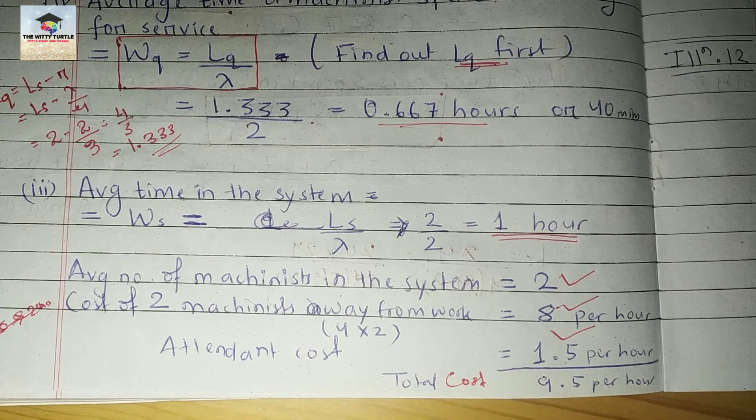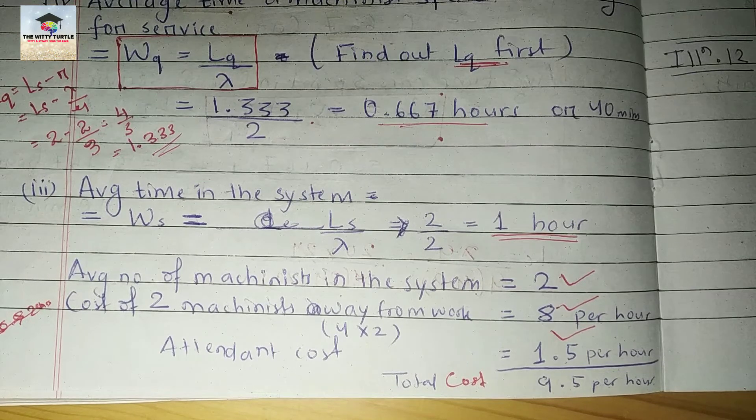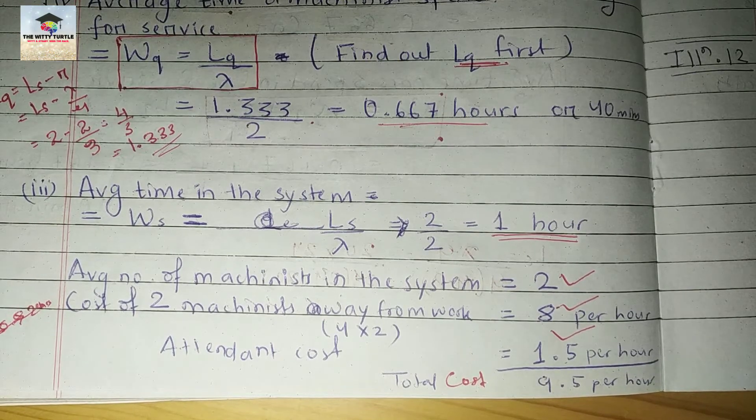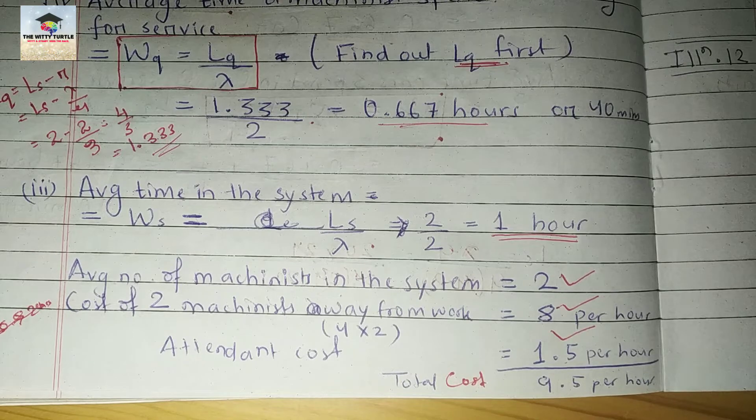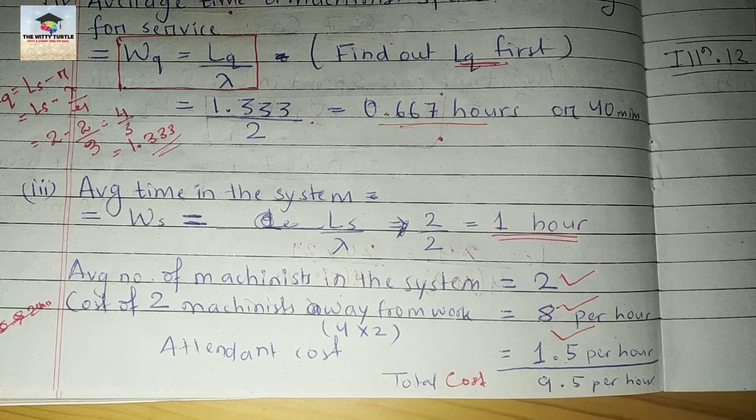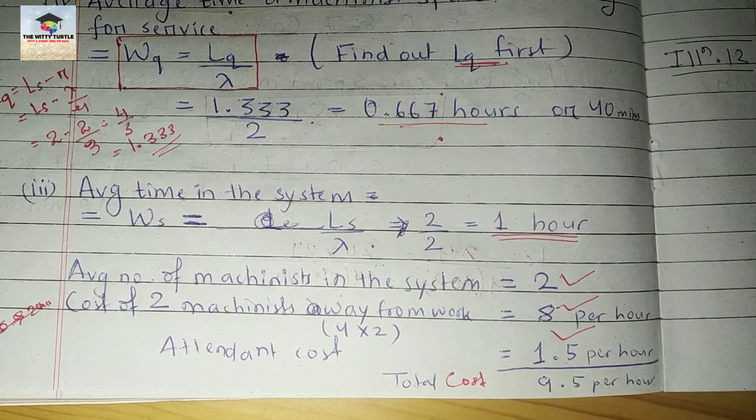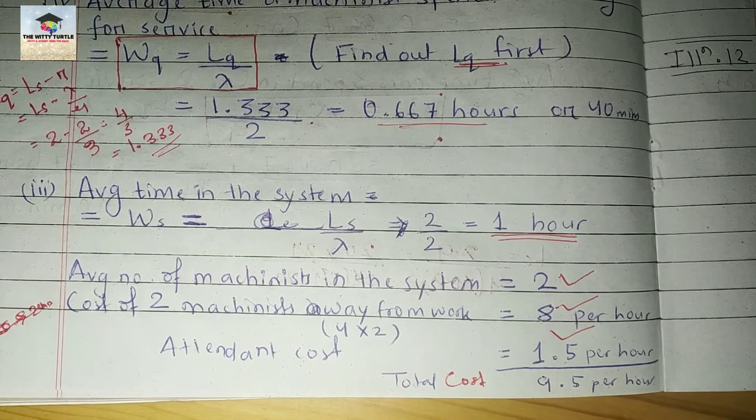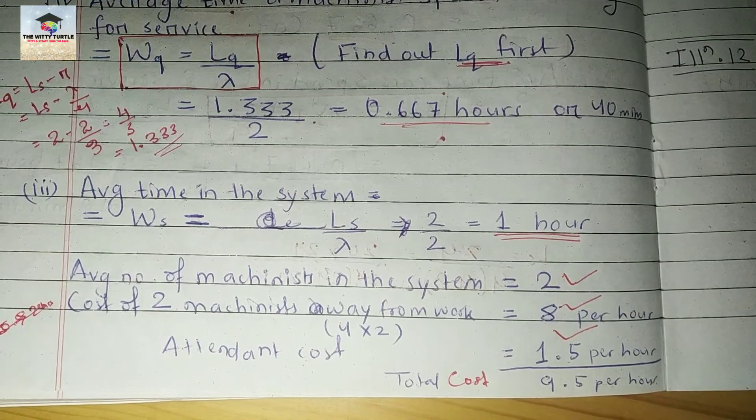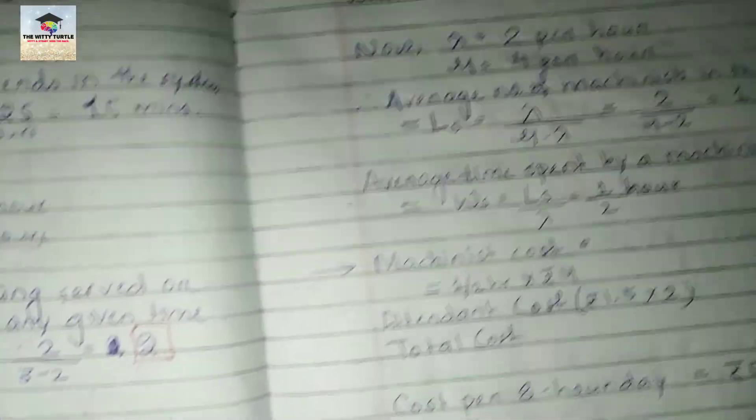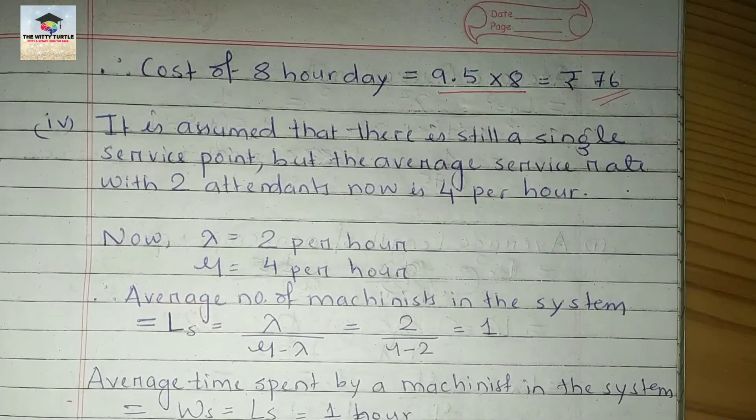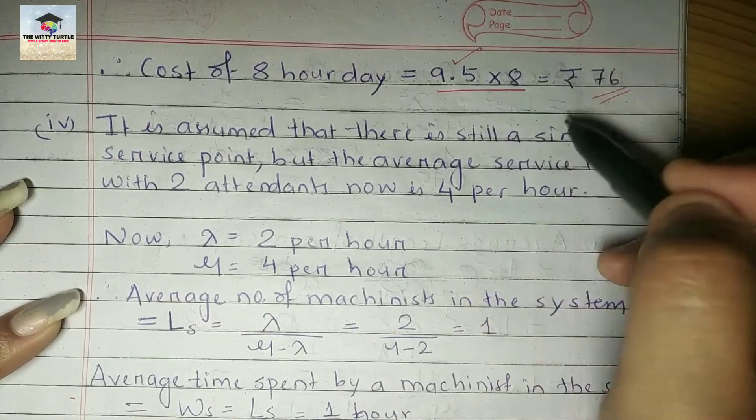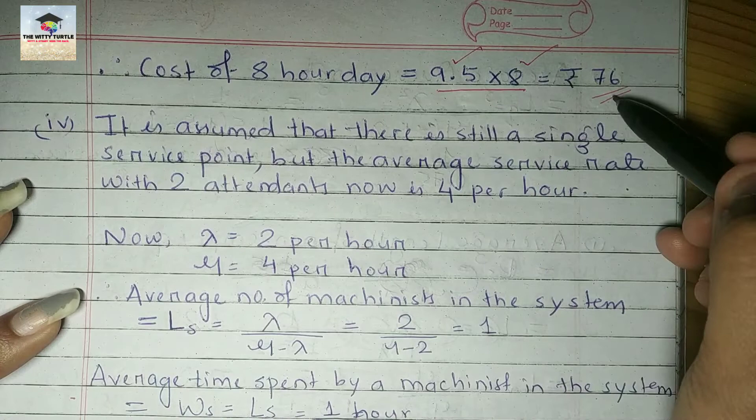If you look at the question, there is only one attendant. In the second paragraph it says the hourly wage paid to the attendant at the service center is rupees 1.50. It says paid to the attendant, meaning there is only one attendant, so the attendant cost will be 1.50 per hour.